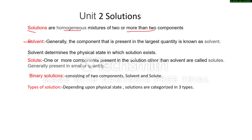A solution has two components: one is solvent and another is solute. Solvent is the component present in the largest quantity, and generally the physical state of the solution is determined by the physical state of the solvent. Components other than solvent are called solutes, present in smaller quantity. If only two components are present, these are called binary solutions.